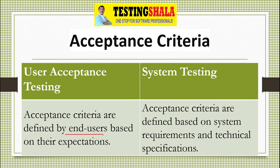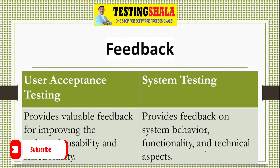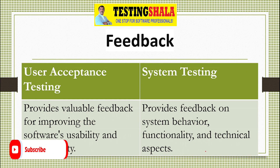The next key difference is acceptance criteria. During user acceptance testing, acceptance criteria are defined by the end user based on their expectations. In system testing, acceptance criteria are defined based on system requirements and technical specifications defined in design documents.